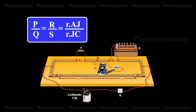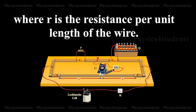Then, P/Q = R/S = R×AJ / R×JC, where R is the resistance per unit length of the wire.